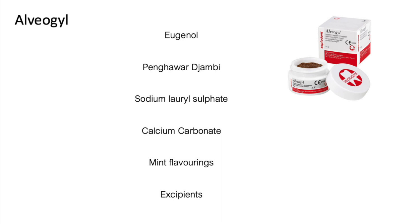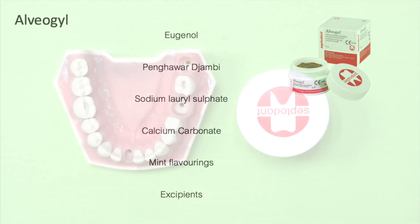Alvigel also contains Pengawar jambi — fibres from the base of the stalks of large fern trees indigenous to Sumatra, used here as a transport medium. Sodium lauryl sulphate is included as a surfactant that lowers surface tension between ingredients and acts as a cleansing agent; it is also found in toothpaste. Additional components include calcium carbonate, mint flavour, and excipients.